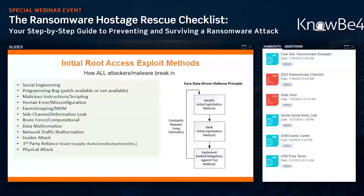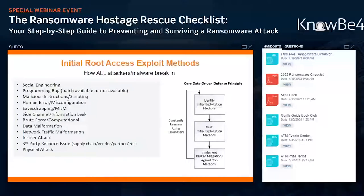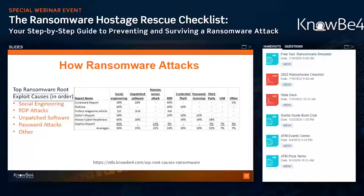Here are the 12 or 13 ways that all hackers and malware, regardless of their intent, break into victims. I've been tracking this for 22 years, and every hacker and malware program has used one of these same 12 or 13 methods. If you want to stop hackers, malware, and ransomware, you need to figure out the most common and most likely ways they're going to get in, mitigate those most likely methods, and create a ranked list of how you're most likely to be compromised. That's how you fight hackers and ransomware.